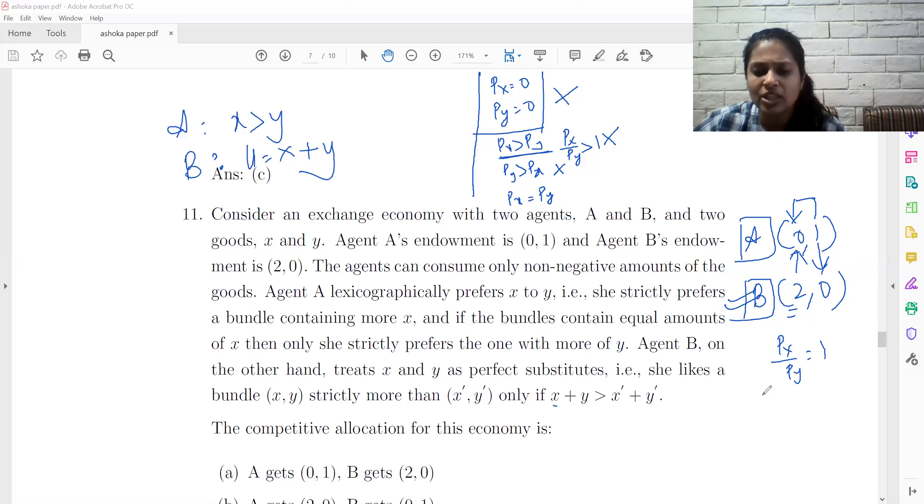So after exchange, the endowment or the allocation of A is going to be 1,0 and the allocation of B is going to be 1,1. At this price ratio, PX by PY equal to one, A will not want to trade further because he would not want to give away his good X.